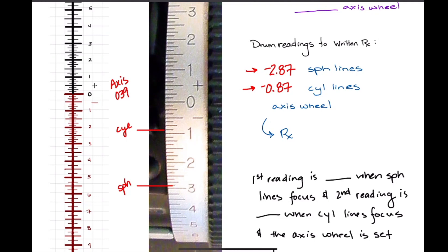And then let's say we have the axis wheel set at 39. So how would we write this prescription? Now we start with our sphere lines, right? So minus 2.87, and our axis wheel is at 39. And then what was the distance that we went from the minus 2.87 to the minus 0.87? Plus 2. Yeah. And if you count them up, you just say, okay, well there's one diopter and there's two diopters, so we went plus 2.